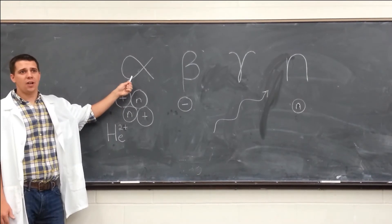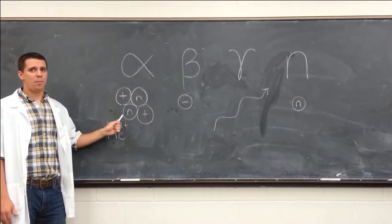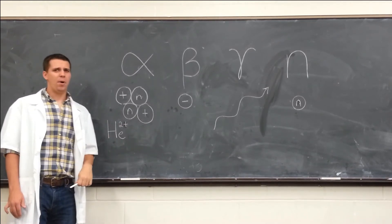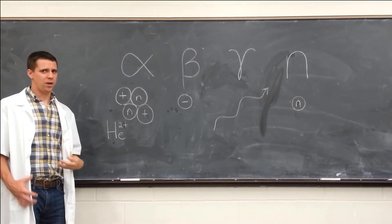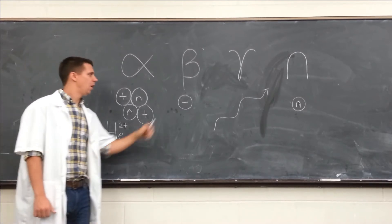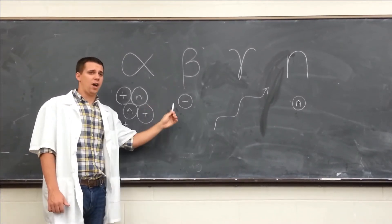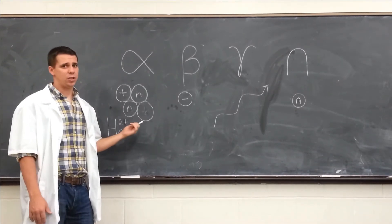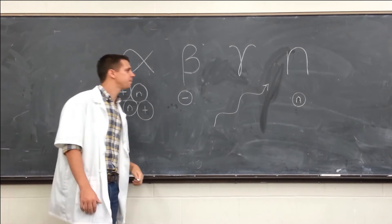Alpha radiation is caused when a helium nucleus breaks off from a big atom like uranium. It's pretty easy to shield, but it can cause a lot of damage to your vital organs if you get too close. Beta radiation is caused when an electron is emitted from a big atom. It's also pretty easy to shield, just requiring a few millimeters of material.